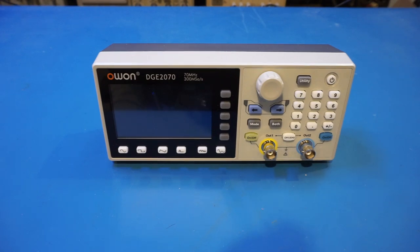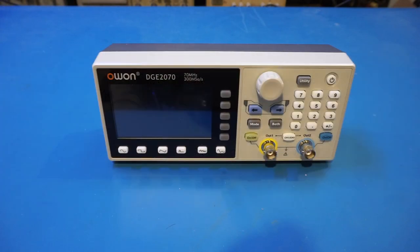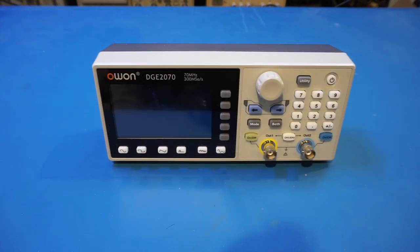From the specifications perspective, the DGE2070 is definitely not worse than the UTG962E. For instance, the maximum sinusoidal output frequency on the 2070 is specced at 70 MHz versus 60 MHz on the 962E. The sample rate is also higher on the DGE2070, specced at 300 mega samples per second versus 200 mega samples per second for the 962E. And for certain signals such as the ramp signal, the maximum output frequency has improved from 400 kHz on the 962E to 2 MHz on the 2070. Other than these minor differences, the hardware specs are quite comparable.